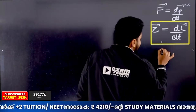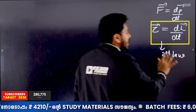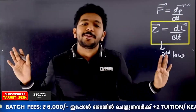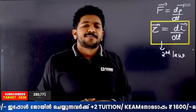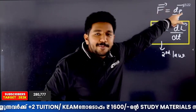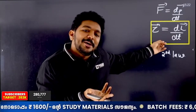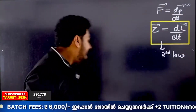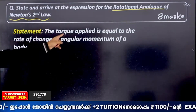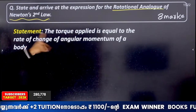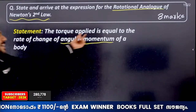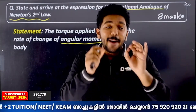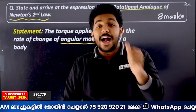Newton's second law in rotation, the rotational analogue of the second law: torque is equal to dL by dt. Just as F equals dp by dt, if you state Newton's second law, you say: force applied on a body is directly proportional to rate of change of momentum. Similarly, torque applied on a body is directly proportional to rate of change of angular momentum.